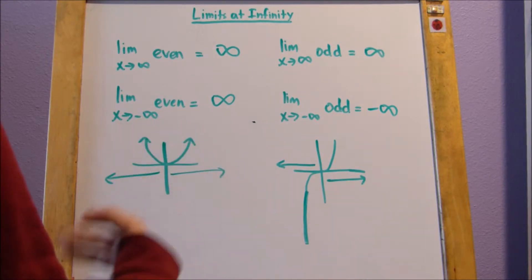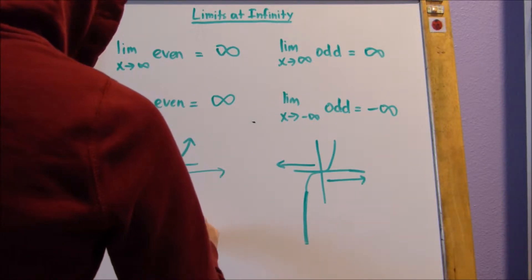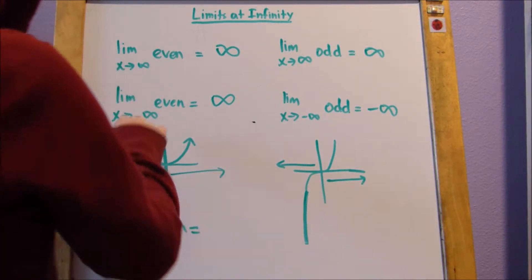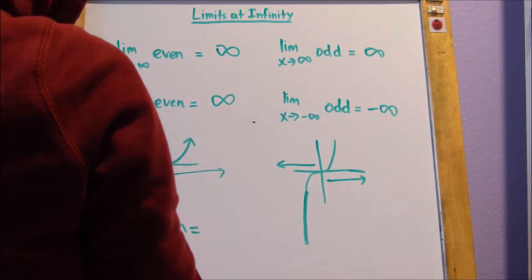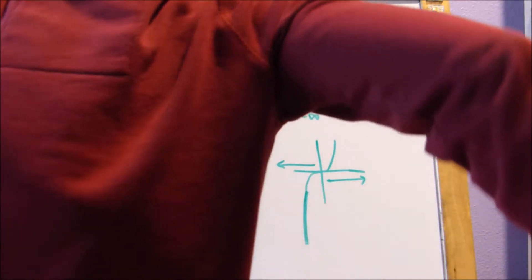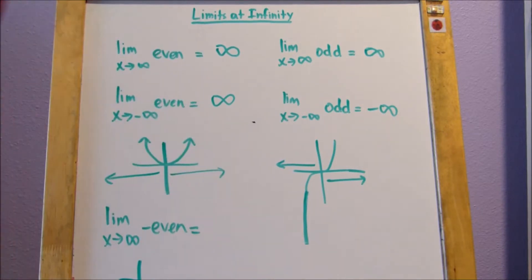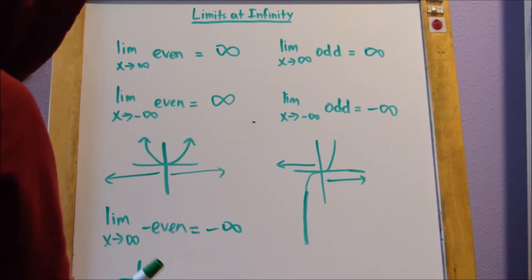Suppose someone asked you to find the limit as x approaches infinity of a negative even function. The way I like to figure this out is sometimes I'll just make arm motions during a test. When an even function is positive, both arms are headed to infinity. When an even function is negative, I make my arms go like an upside down bowl. So when our evens are negative, like negative x squared, as x approaches both infinity and negative infinity, the limit is going to be negative infinity — that's where the y is heading.